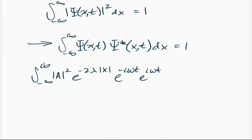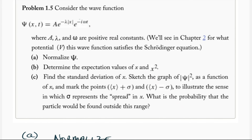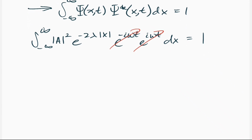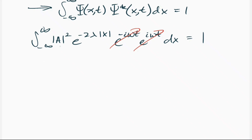When we square the wave function, we see that it inserts a 2 in the exponent, giving e to the negative 2λ|x|. The complex conjugate of e to the negative iωt is e to the positive iωt, so adding negative iωt to positive iωt gives zero — e to the zero power is 1. So the result is time-independent; there's no more t factor.